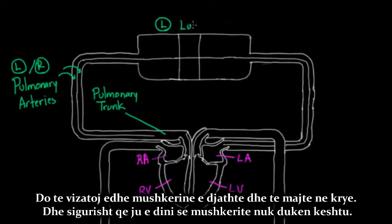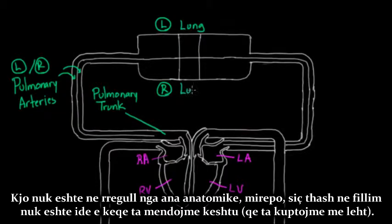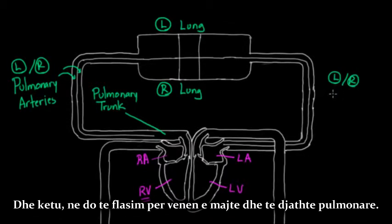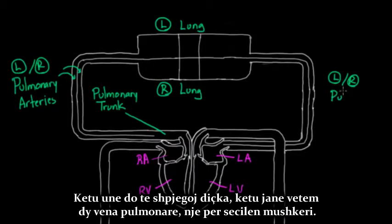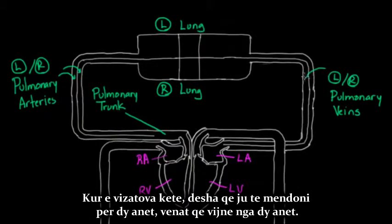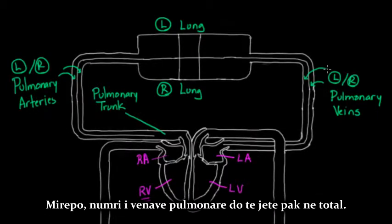I'm drawing the left and right lung up top. This is not anatomically correct, but as I said, it's not a bad way of thinking about it. Blood goes through the lungs and comes out on the other side, where we talk about left and right pulmonary veins. There aren't just two pulmonary veins — one for each lung — there are usually more than that. So when I draw two, think of the two sides, but the actual number could be a few pulmonary veins in total.